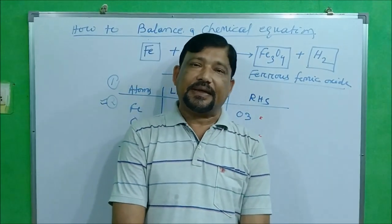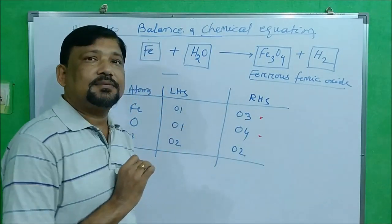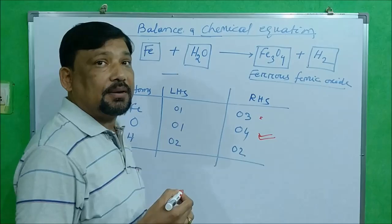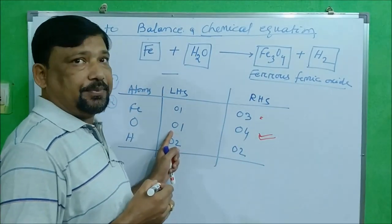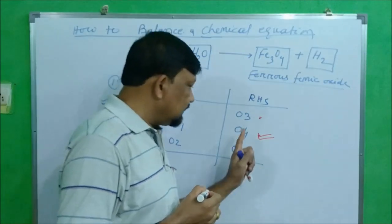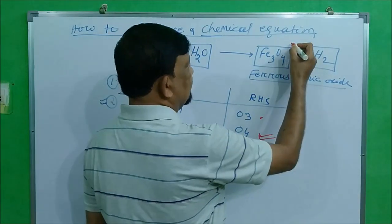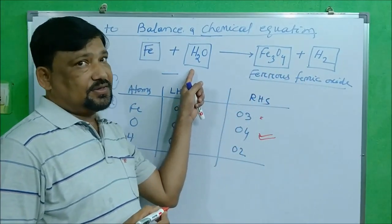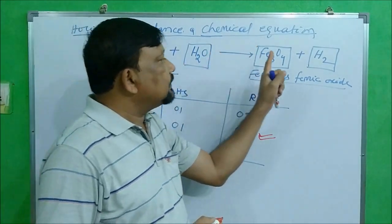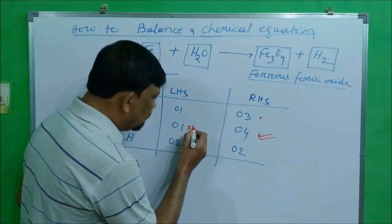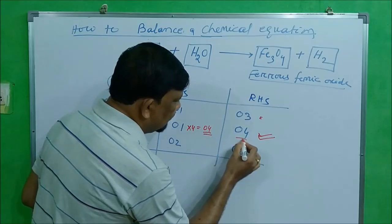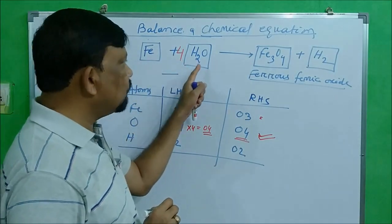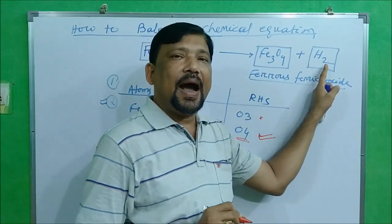In Step 3, you first find the case of maximum imbalance. That is oxygen, where the RHS has 4 atoms but the LHS has only 1. The 4 oxygens are in ferrous ferric oxide on the RHS. To balance, you multiply the water molecule by 4, giving 4 oxygens on the LHS. The new equation is: Fe + 4H2O → Fe3O4 + H2.